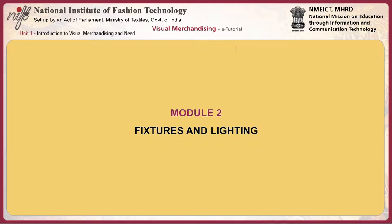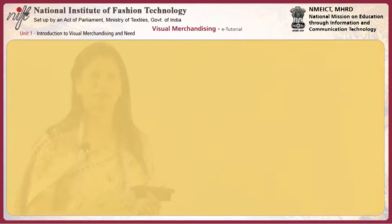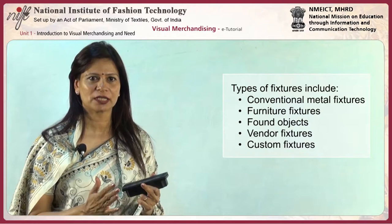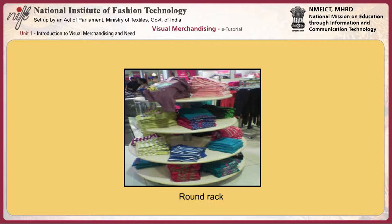Now we move on to fixtures and lighting. There are various types of fixtures: conventional metal fixtures, furniture fixtures, found objects, vendor fixtures, and custom fixtures. The first type is conventional metal fixtures, which are also of different types. The first of these is the round rack, a capacity fixture which means it can hold large quantities.